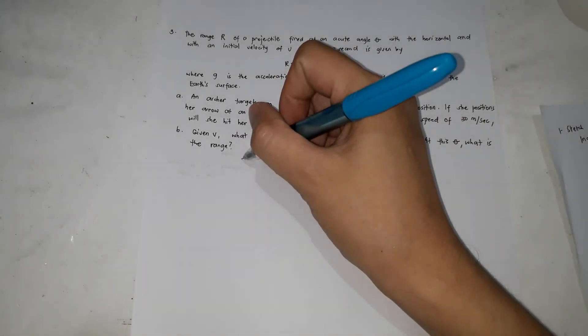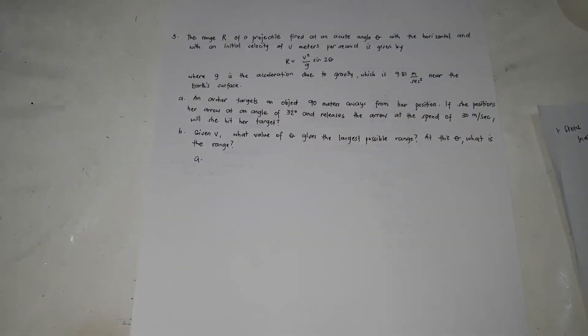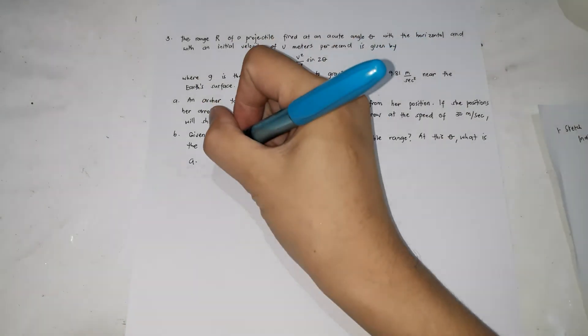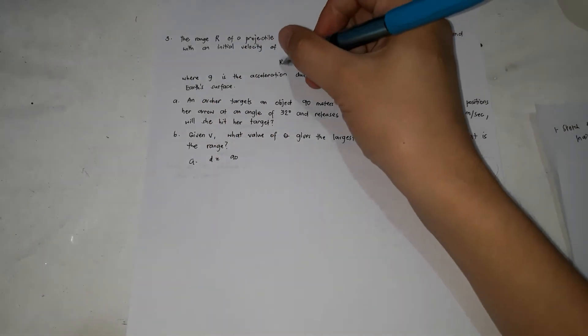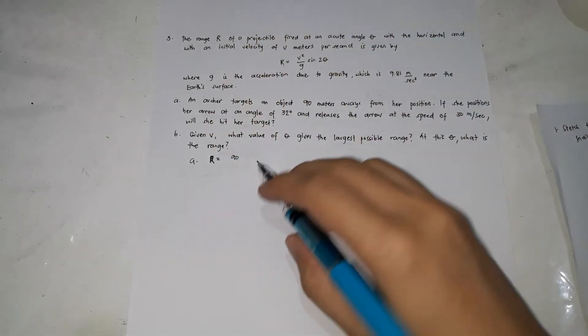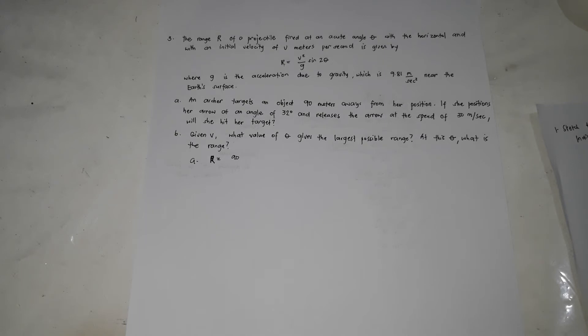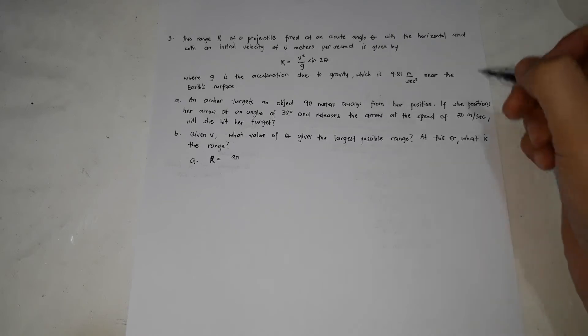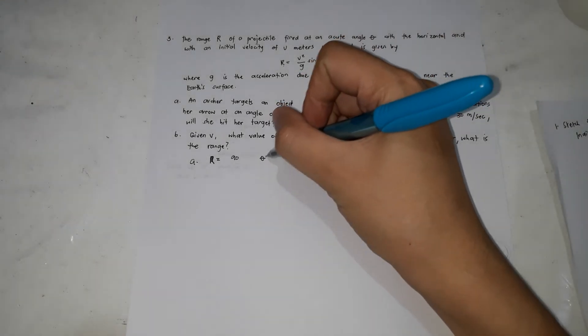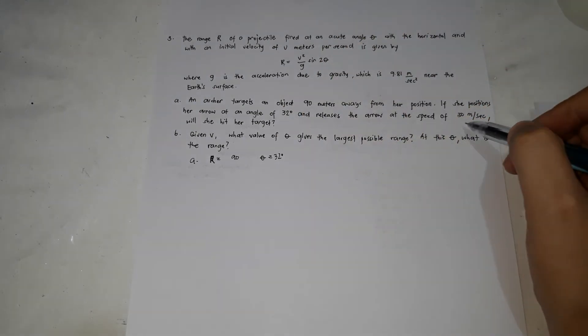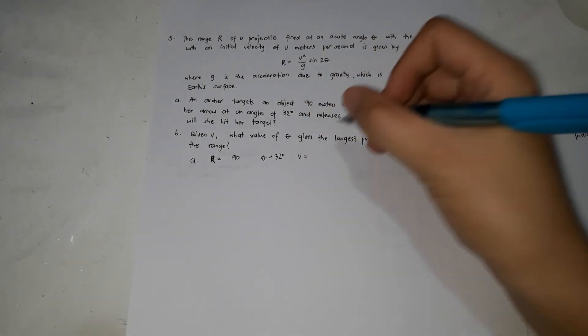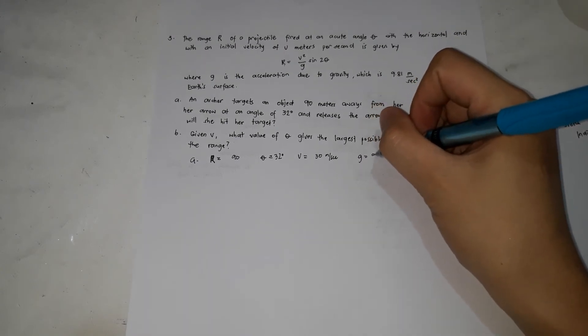For letter A: the target distance is 90 meters (the range needed). We compare our computed R with 90 m — if R equals 90, she hits; if less, she falls short. Given: θ = 32°, V = 30 m/s, G = 9.81 m/s².